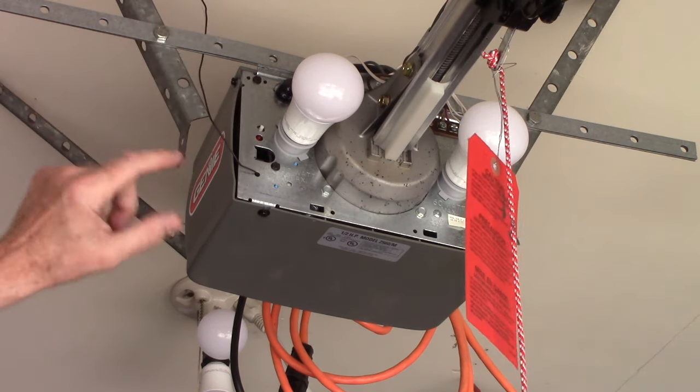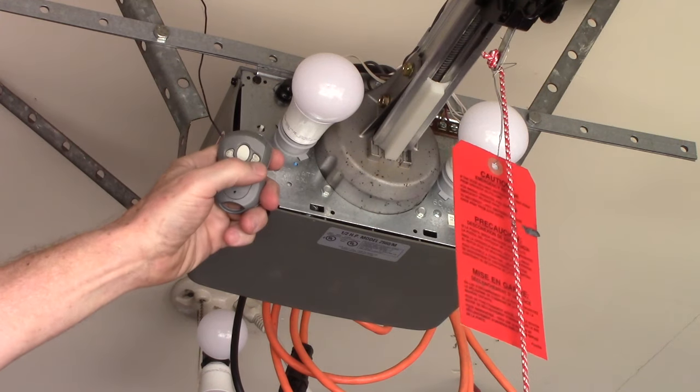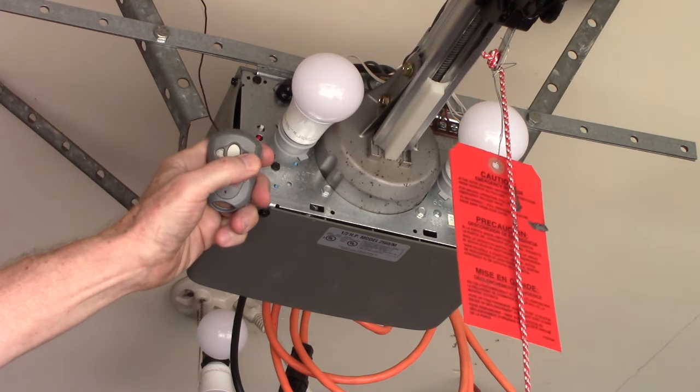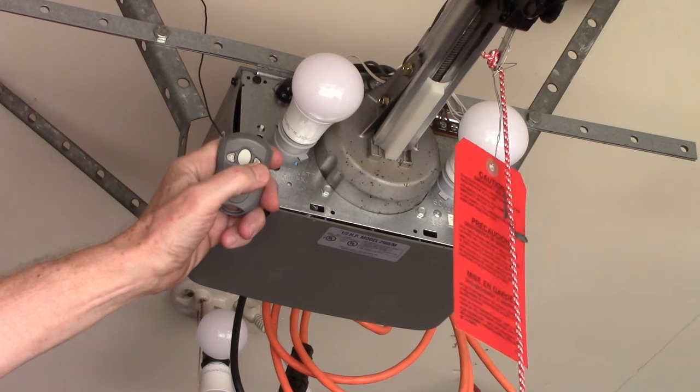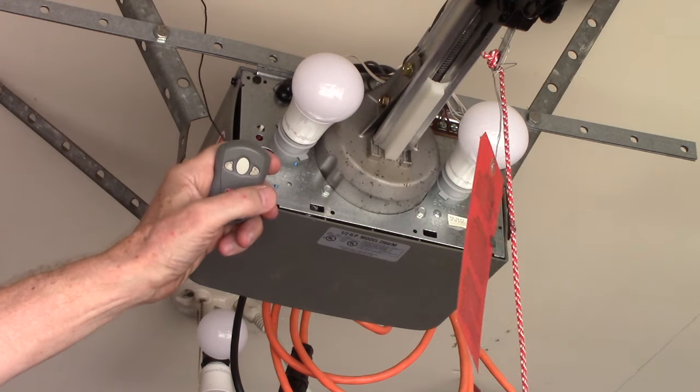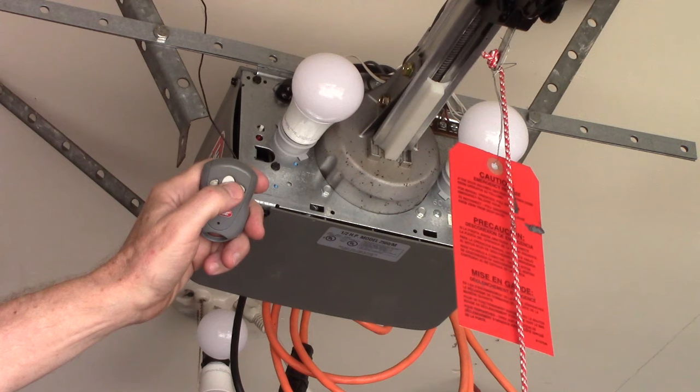you're going to press and release that same button. It's going to blink for 30 seconds. While it's blinking, you need to press the button on your remote three times and that will set the code and now you can try it.